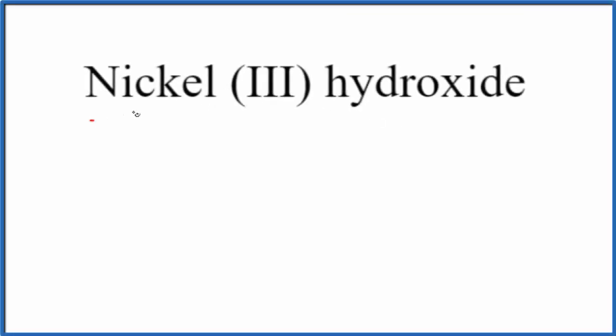In this video, we'll write the formula for nickel-3-hydroxide. So, let's start out, we'll write the symbol for nickel, that's Ni. And the 3, that Roman numeral 3 right here, tells us we have a 3-plus ionic charge for the nickel, and we're going to need to take charge into account when we write the formula here for nickel-3-hydroxide.